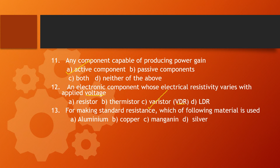Next, question number 13: For making standard resistance, which material is used? The important point is that manganin is used for making standard resistance. From the options — nichrome, constantan, and manganin — manganin is the correct answer.